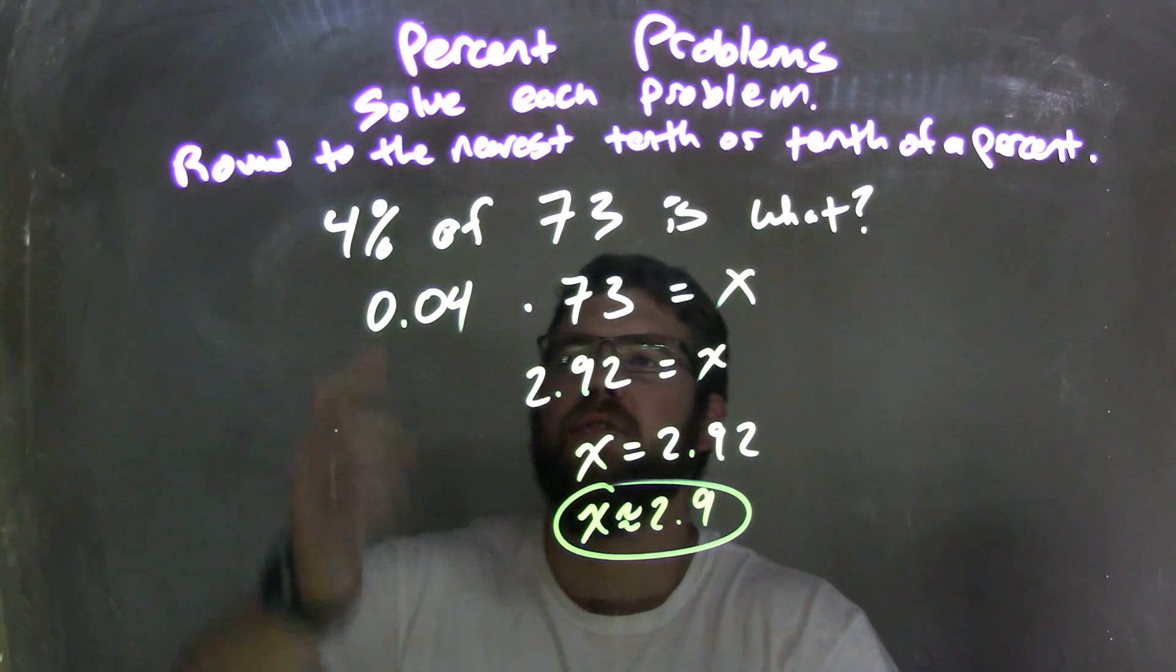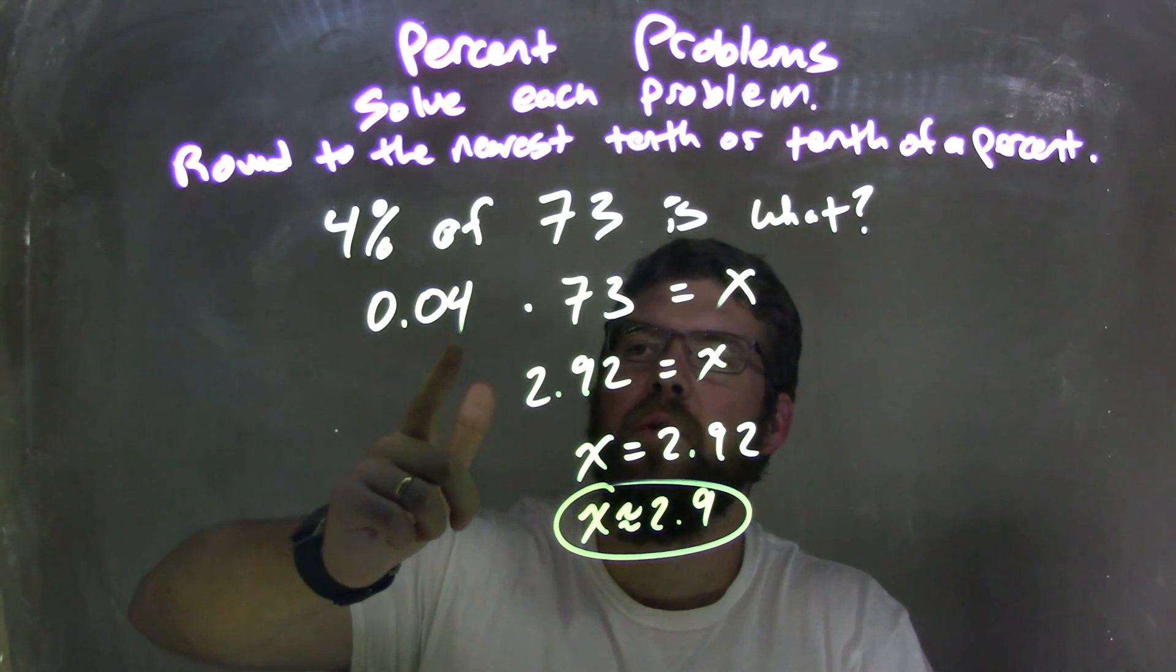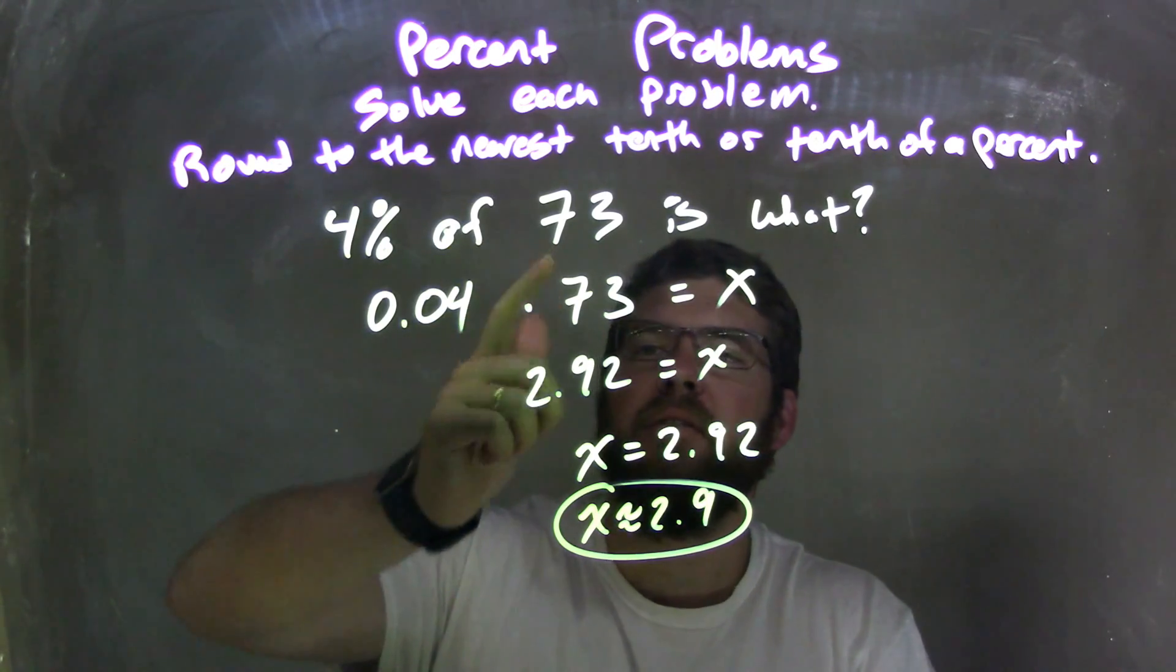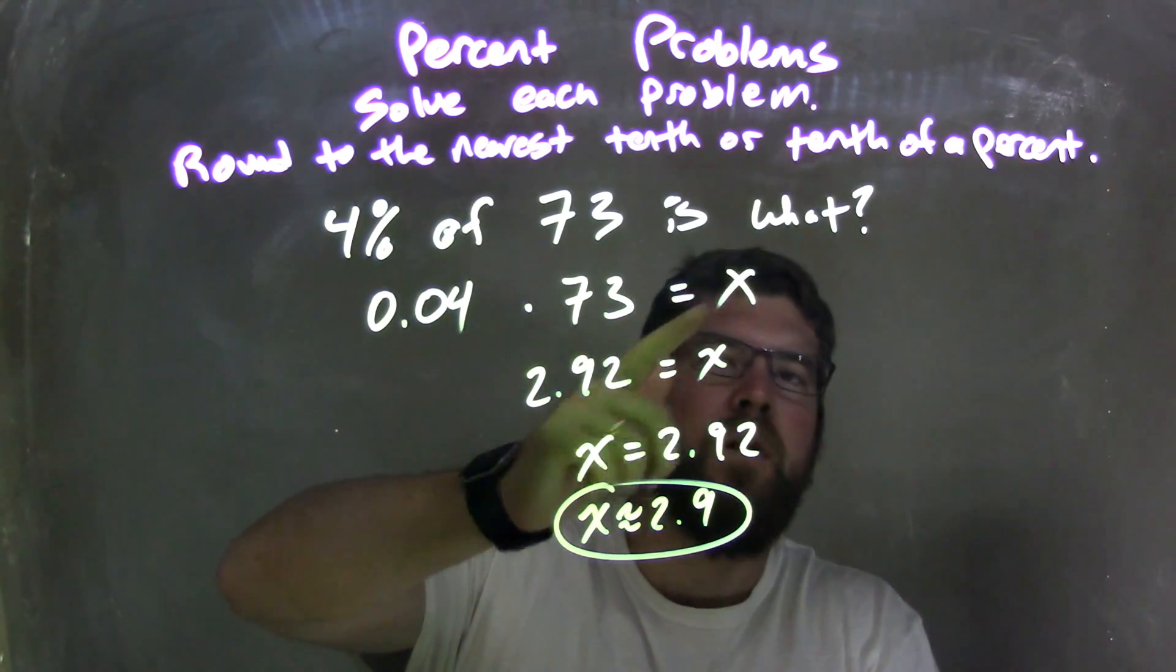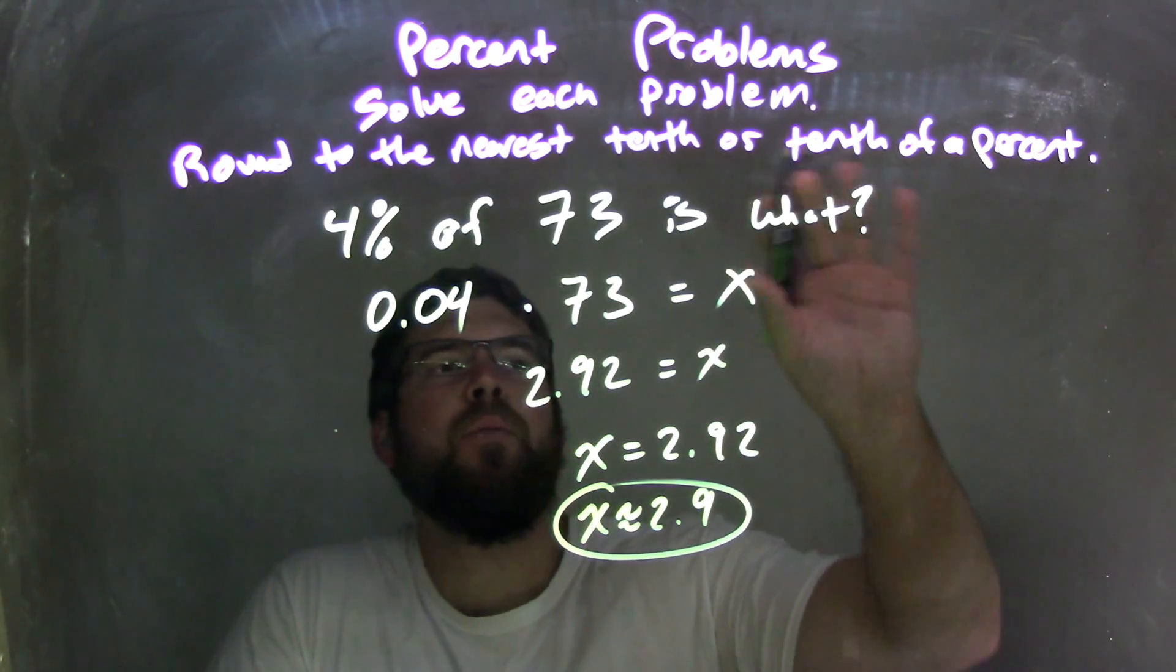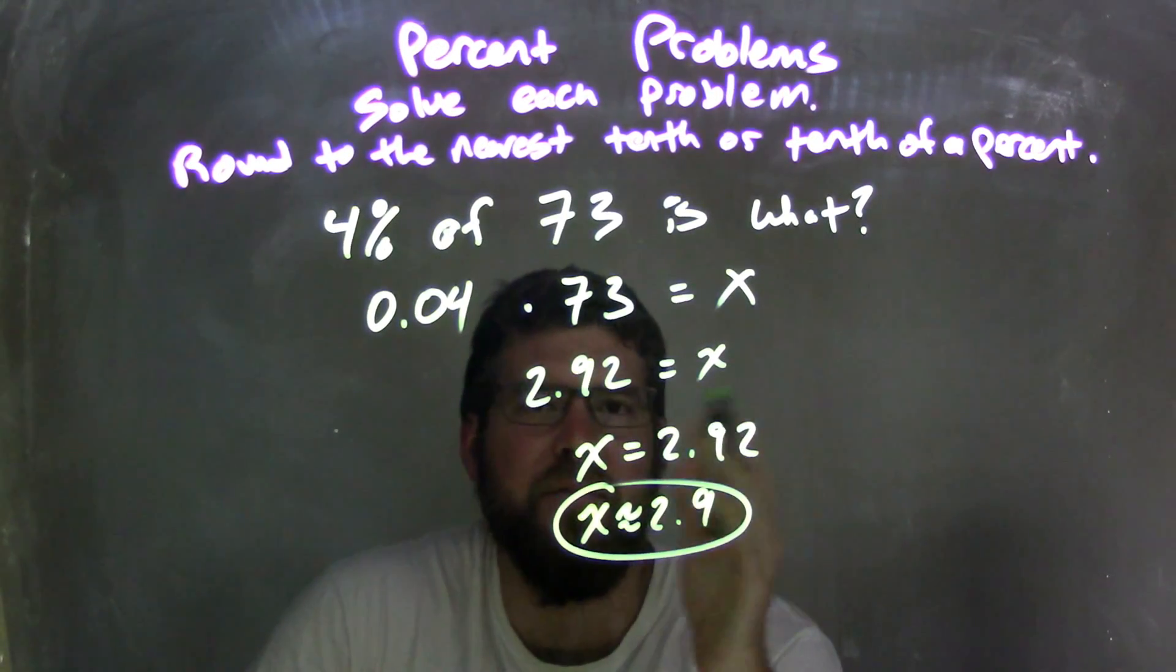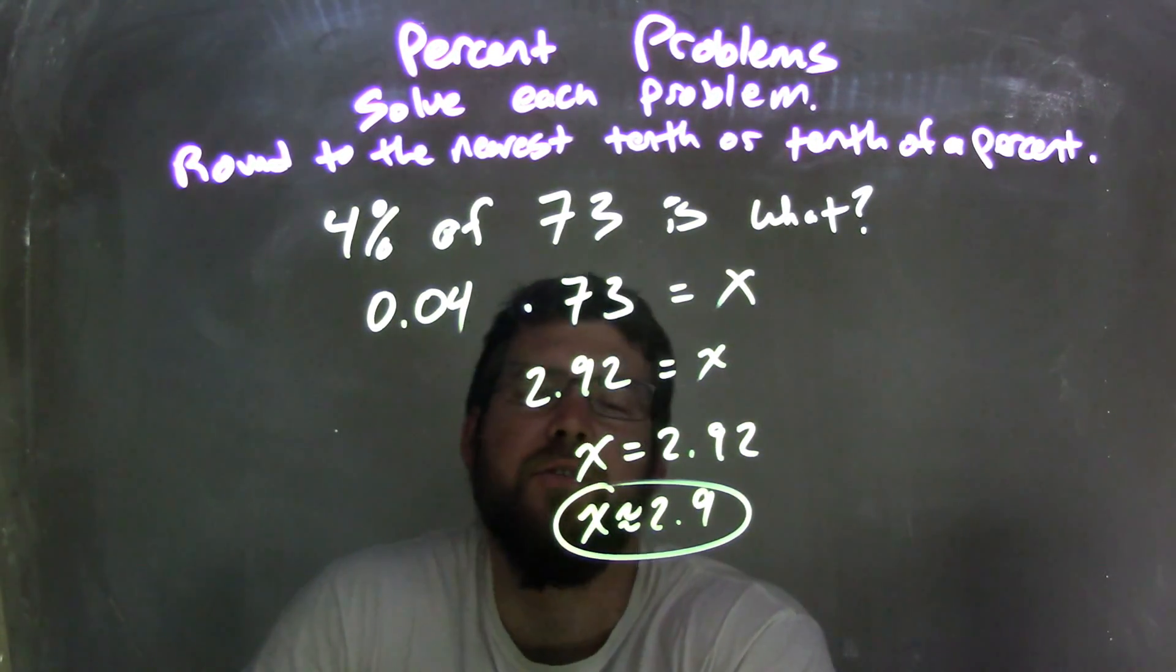So let's recap. We started with 4% of 73 is what? I converted that 4% to be 0.04. And then of 73, multiplied by 73, equals what? I put the variable x there. But I'm taking this word problem and putting it into our algebraic structure, basically into an equation to solve.